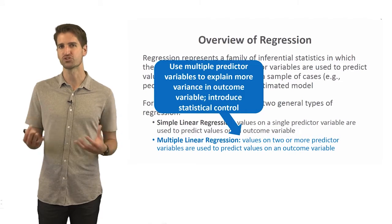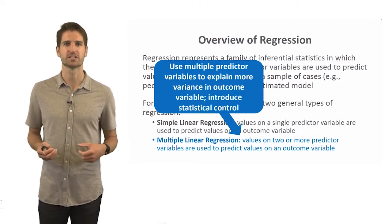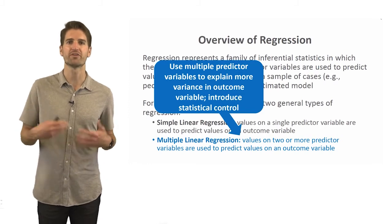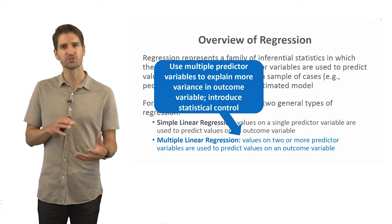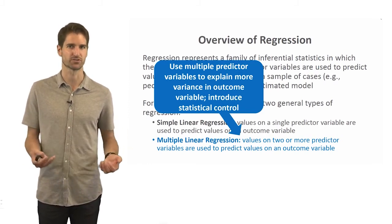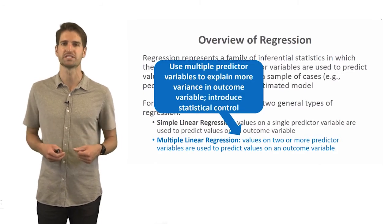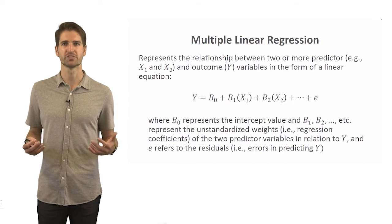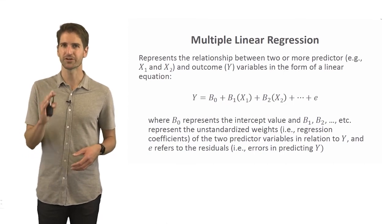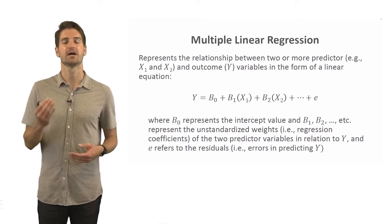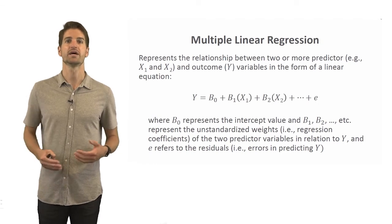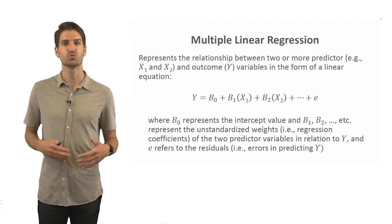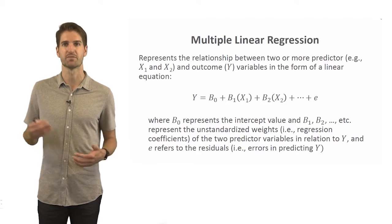The 'multiple' in multiple linear regression means that we're using multiple predictor variables to explain more variance in an outcome variable. This also introduces a concept called statistical control, which we'll dive into in more detail shortly. We're talking about a linear relationship — specifically, the linear relationship between two or more predictor variables and some outcome variable.